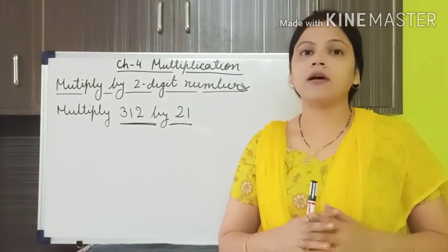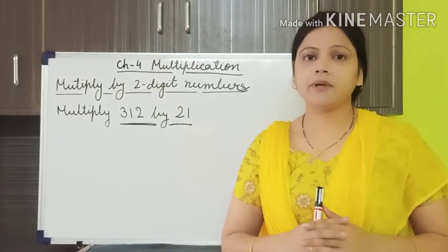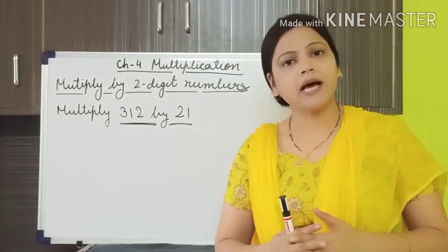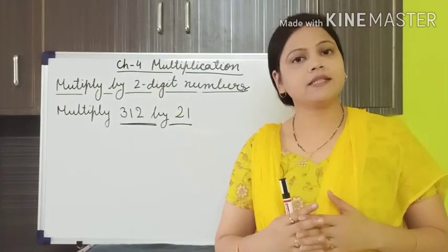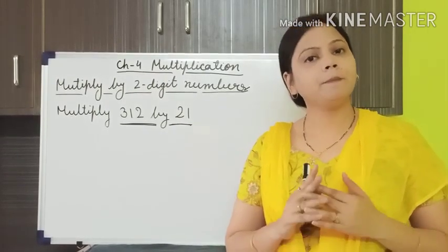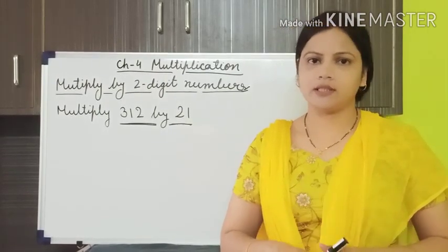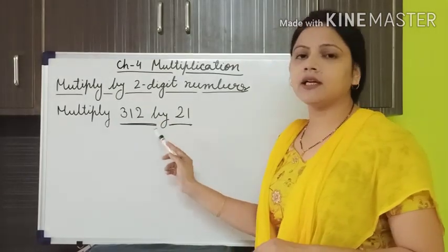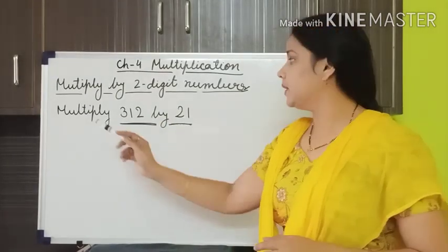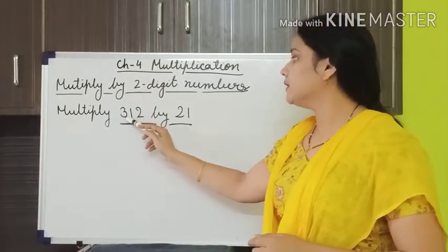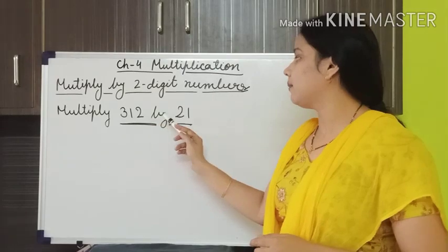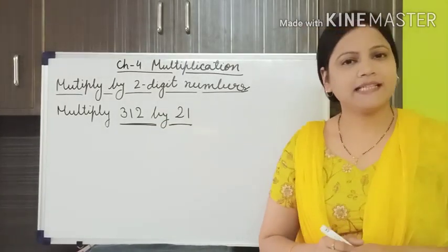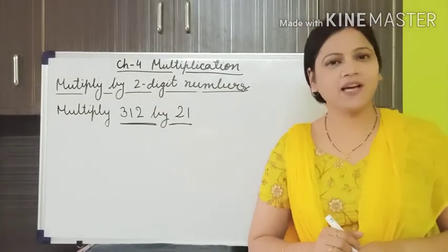Now in this video we will learn to multiply a 3-digit number by a 2-digit number. I have already written the problem here: multiply 312 by 21. So let us start now.